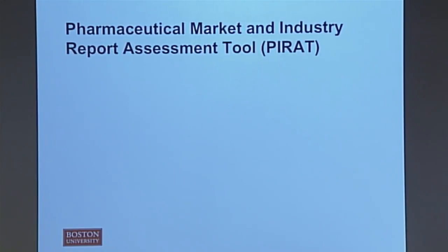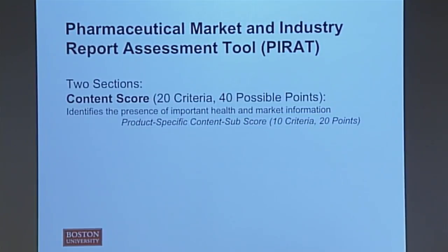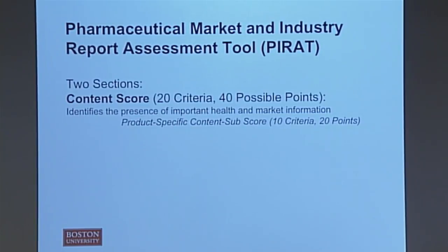The assessment tool is called the Pharmaceutical Market and Industry Report Assessment Tool — or as I affectionately call it, the PIRATE. For all pharmaceutical reports, regardless of their focus, there is an 80-point scale with 40 criteria. For those that are for specific products, such as insulin, there are an additional 10 criteria and 20 possible points, making it out of 100, because for those we really care more about the production volume for one specific product. For the content score, it's really looking at whether important health and market information is present or not. There is also a product-specific sub-score.